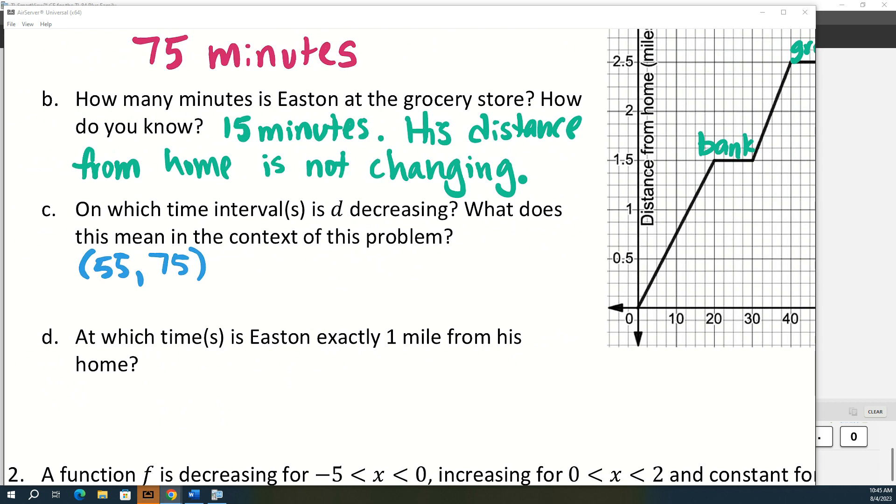So what do you think this means in the context of the problem? His distance is decreasing? What's he doing? He's walking back towards his house.